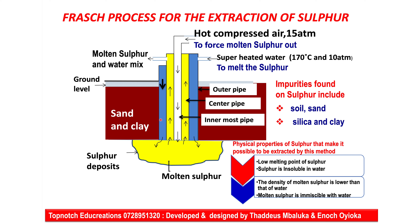An examiner can draw this setup and ask you to show by arrows the direction of flow of the components passing through the pipes. You need to know that the water in the outermost pipe moves downward, the hot compressed air in the innermost pipe also moves downward, but the middle pipe collecting the sulfur moves upward.